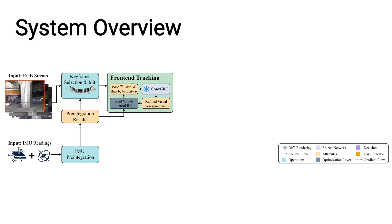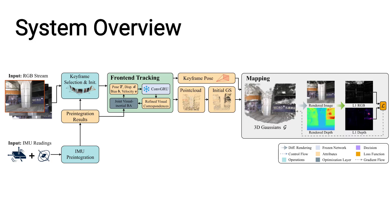Following DROID-SLAM, dense visual correspondences are iteratively refined through a ConvGRU module. For mapping, each keyframe is unprojected into 3D using its estimated depth and converted into initial Gaussians, which are fused into the global map.